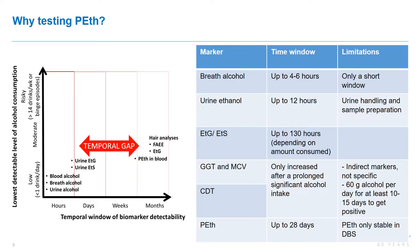If we take a look at the general detection of alcohol, we see that very short term after drinking, breath analysis is the gold standard, which is then followed up or confirmed with ETG or ETS analysis from the urine. However, ETG and ETS are only detectable up to 130 hours after consumption. Long-term biomarkers are GGT or CDT; however, especially CDT is an indirect biomarker and you need to drink a lot of alcohol to be positive.